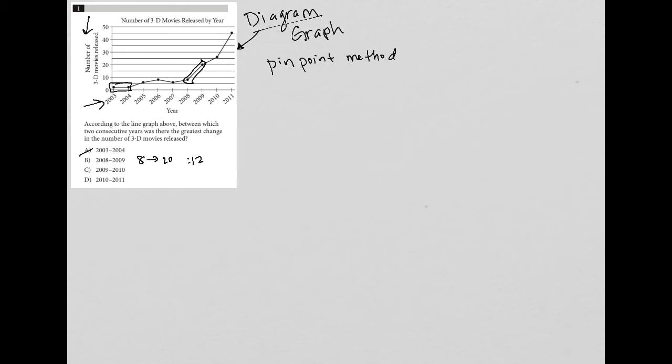And then 2009 to 2010, also a change. Doesn't look as steep, however. Let's make sure. 2009 was about 20, and 2010 looks like maybe 26. So it's a change of 6. Therefore, choice B is better than choice C because it has a greater change.